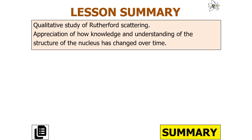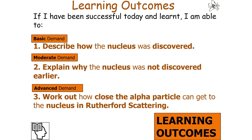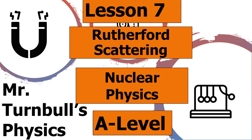If we've learned in today's lesson, we should be able to have a qualitative understanding of Rutherford Scattering and an appreciation of how knowledge and understanding of the structure of the nucleus has changed over time. We should be able to describe how the nucleus was discovered, explain why the nucleus was not discovered earlier, and work out how close an alpha particle can get to the nucleus in the Rutherford Scattering experiment. I hope you've enjoyed this lesson on Rutherford Scattering, which is part of the nuclear physics topic in AQA A-level physics. Thank you very much for watching.